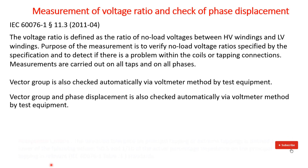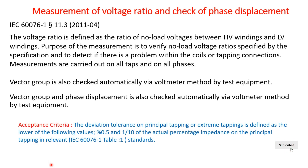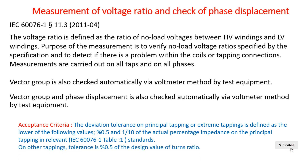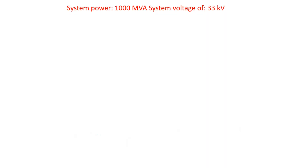The acceptance criteria — the deviation tolerance for the principal tapping and extreme tapping — is defined as the lower of the following values: 0.5 percent, and 1 over 10 of the actual percentage impedance of the principal tapping, as per IEC 676 Table 1. For other tappings, the tolerance is 0.5 percent of the design value of the turn ratio.